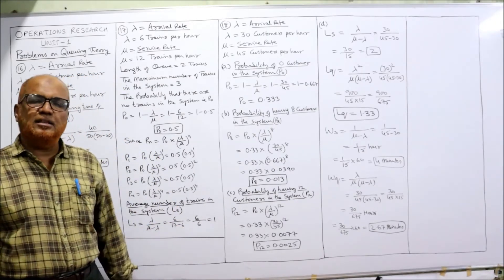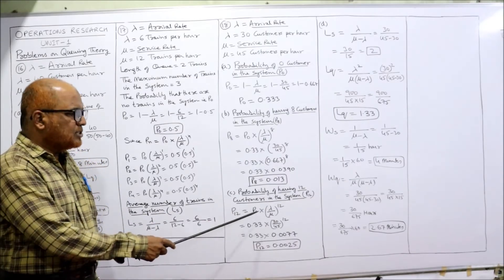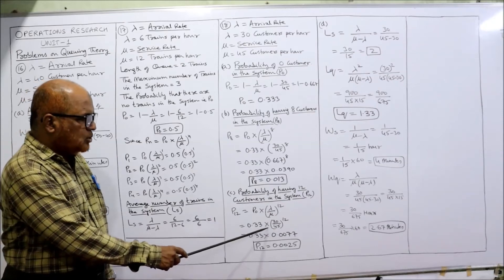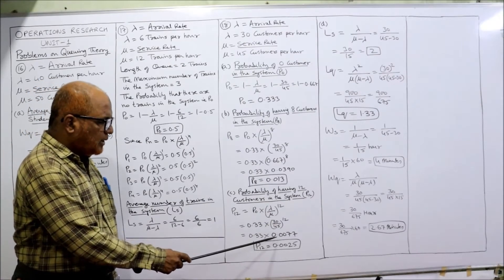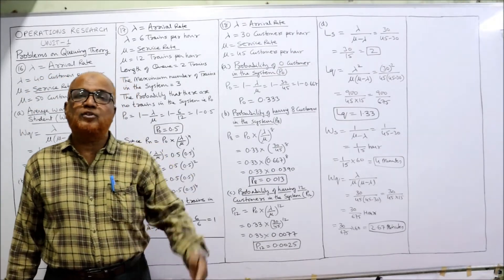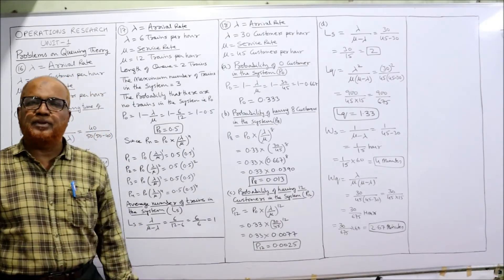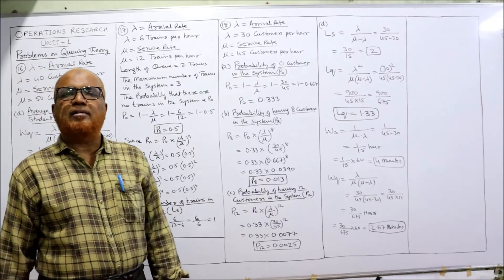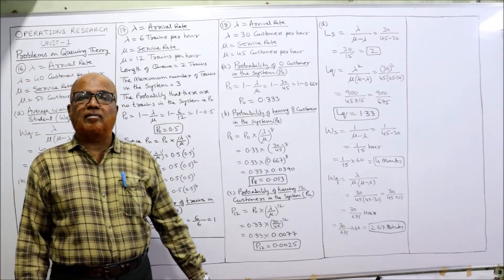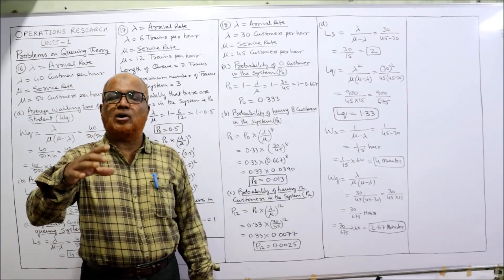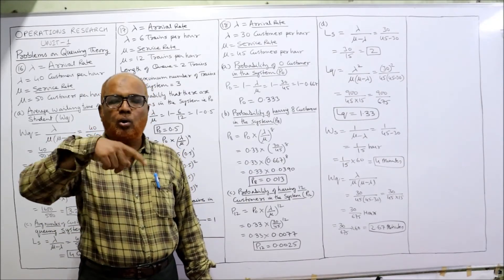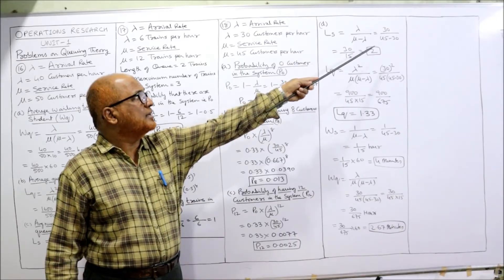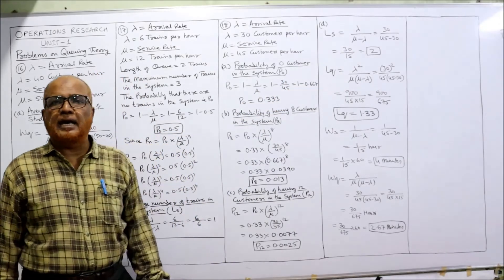Probability of having 12 customers: P(12) = P(0) times (λ/μ)¹² = 0.333 times (30/45)¹². Multiply 0.667 twelve times to get 0.0077, then multiply by 0.333: P(12) = 0.0025. Now calculate LS: average number of customers in the whole system. LS = λ divided by (μ minus λ) = 30 divided by (45 minus 30) = 30 by 15 = 2 customers.